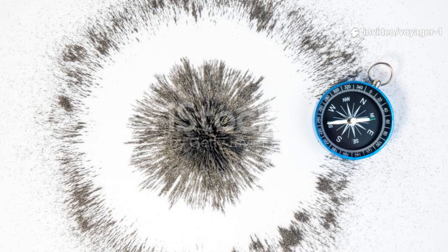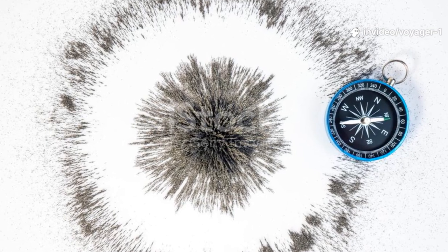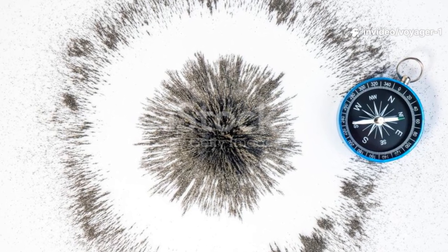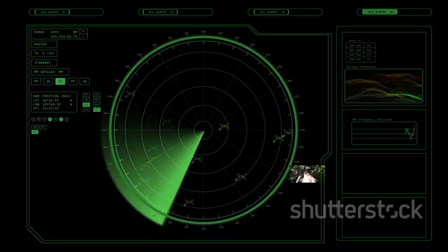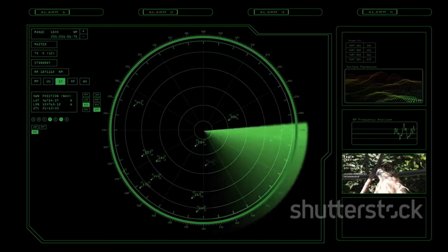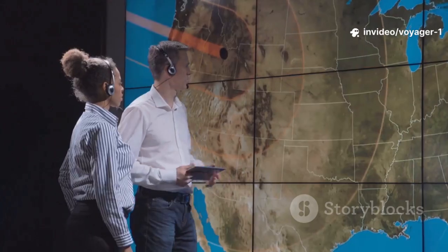After crossing the boundary, the magnetic field around Voyager 1 remained stubbornly pointed in the same direction as the sun's. It was stronger, and it was certainly different, but it hadn't rotated. This was a complete and utter puzzle.